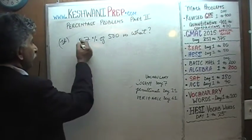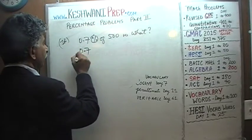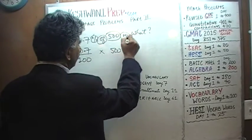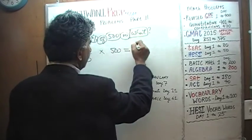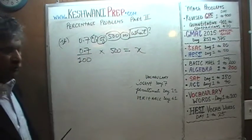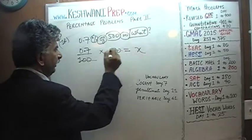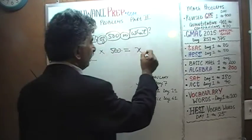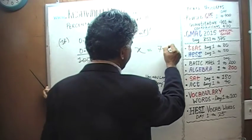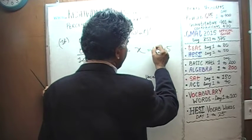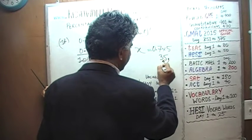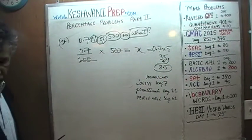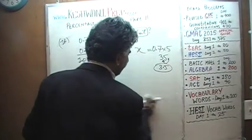0.7% means 0.7 over 100, times 500, equals x. Divide top and bottom by 100: 100 goes away and 500 becomes 5. So x equals 0.7 times 5. We know 7 times 5 is 35, so 0.7 times 5 is 3.5. The answer is 3.5.